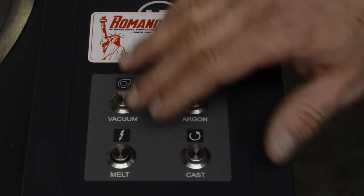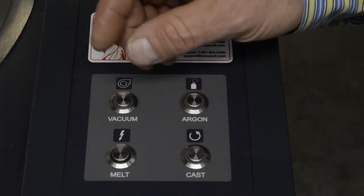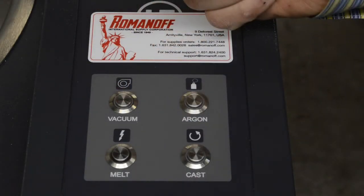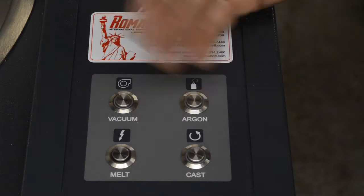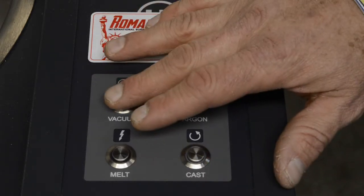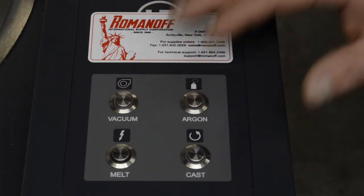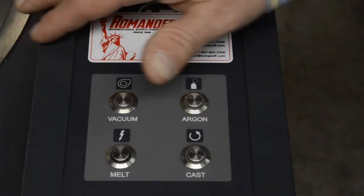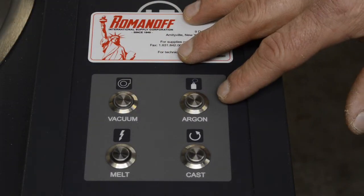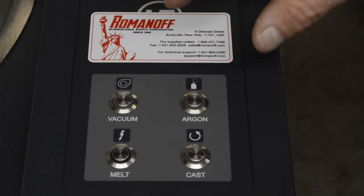Then after we press melt, which is going to start heating up the metal, we're going to press vacuum. So now the metal is melting under vacuum. Once it reaches a full vacuum, which is quite quick from the internal vacuum pump, we're going to shut the vacuum pump off based on the reading from the gauge. And at that point, we're going to press argon, and it's going to backfill this chamber, the casting chamber, with argon gas while it's melting. So it's melting in an inert atmosphere.